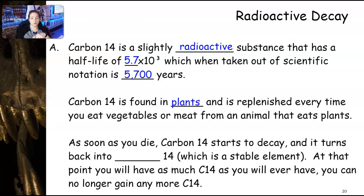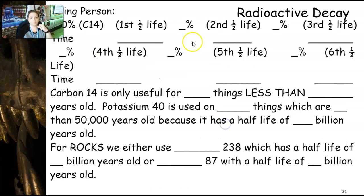Carbon-14 is found in plants, and it is replenished every time in your body, every time you eat vegetables or you eat meat from animals that eat plants. And as soon as you die, the carbon-14 starts to decay. And it turns back into, according to the reference table in the disintegration, nitrogen-14, which is a stable element. And at that point, when you die, you will have as much carbon-14 in you as you will ever have. You can no longer gain any more. You can only get rid of it or it can disintegrate.